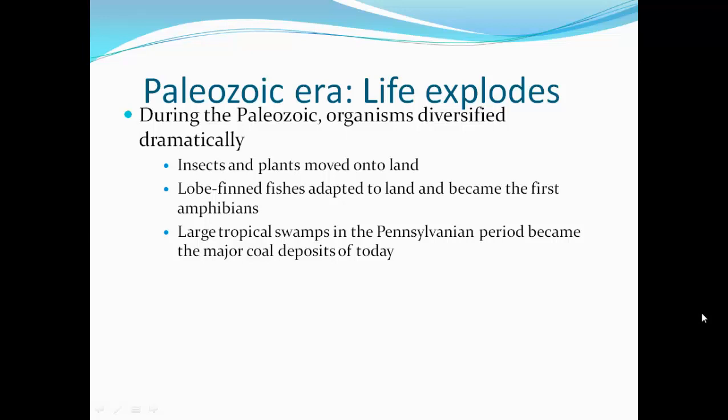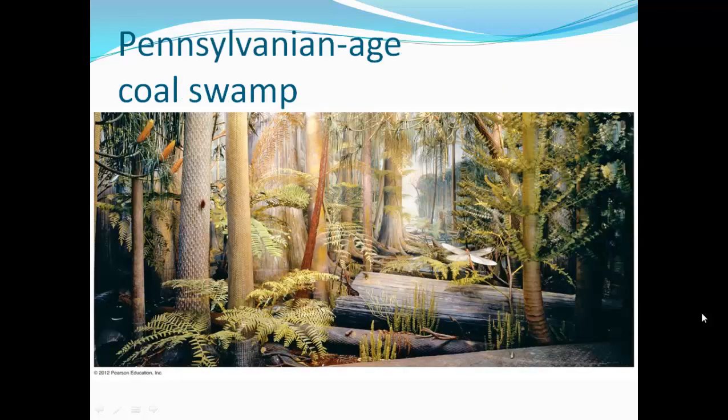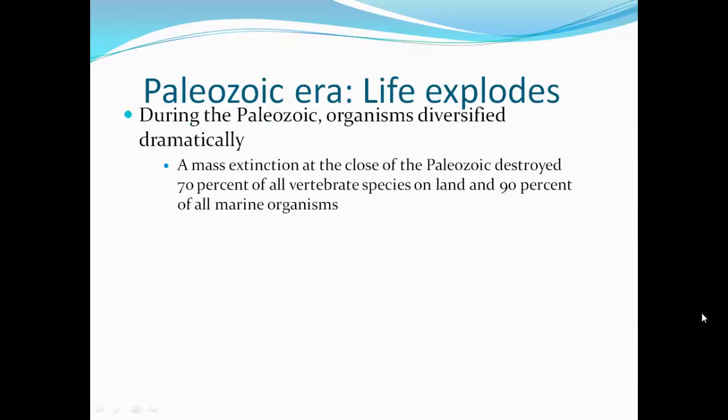During the Paleozoic, organisms diversified dramatically. Insects and plants moved onto the land. Lobe-finned fishes adapted to the land and became the first amphibians. Large tropical swamps in the Pennsylvanian period became the major coal deposits of today — here's a Pennsylvania-age coal swamp. A mass extinction at the close of the Paleozoic destroyed 70% of all vertebrate species on land and 90% of all marine animals.